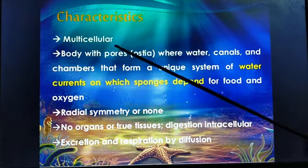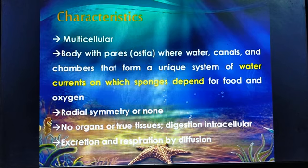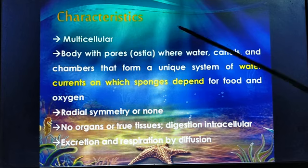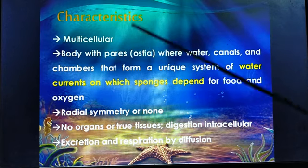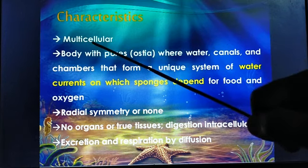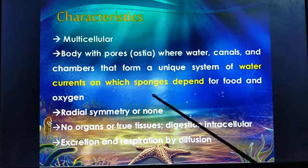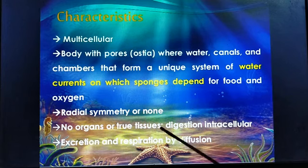First, they are multicellular. In the previous class, we learned that depending upon tissues, organisms are classified into Parazoa and Metazoa. Porifera comes under Parazoa, meaning they have more number of cells, but no organs or no true tissues are present.